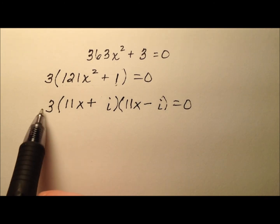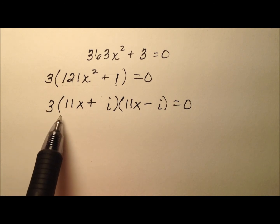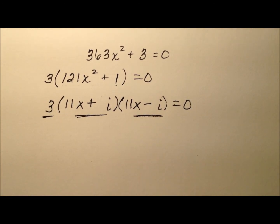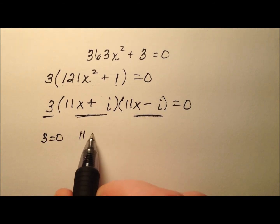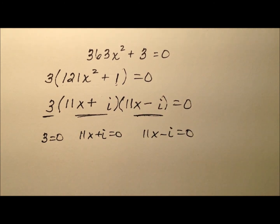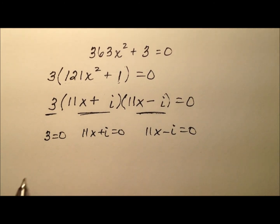So now to finish my solving the equation by factoring, I'm going to set each one of these factors equal to 0. So 3 equals 0, 11x plus i equals 0, and 11x minus i equals 0. Of course the 3 equals 0 is a false statement, there's no variable, it doesn't give me anything, so I'm just going to cross that out.